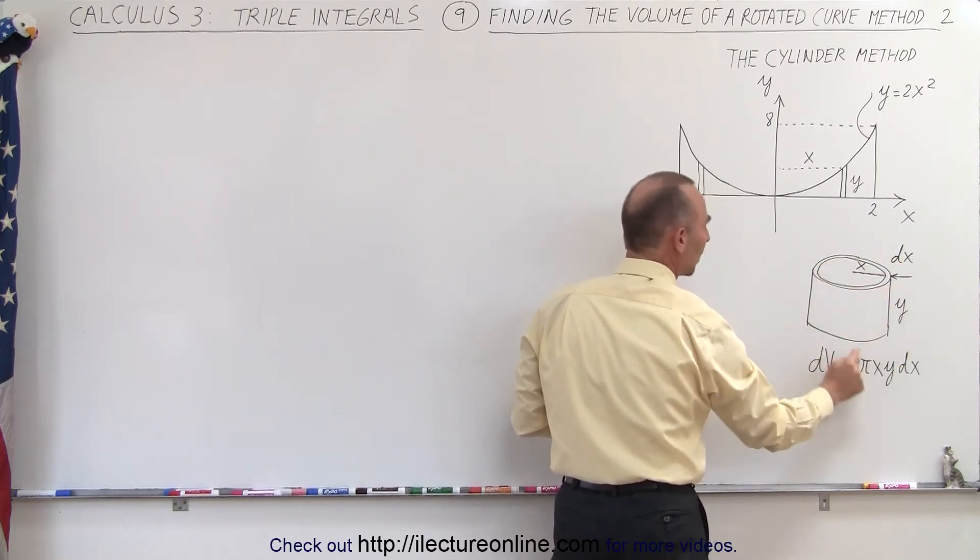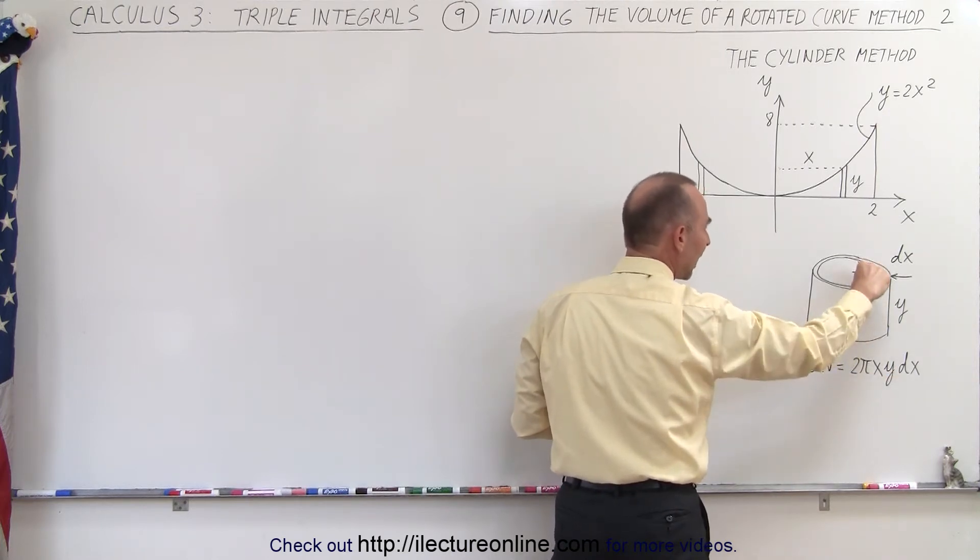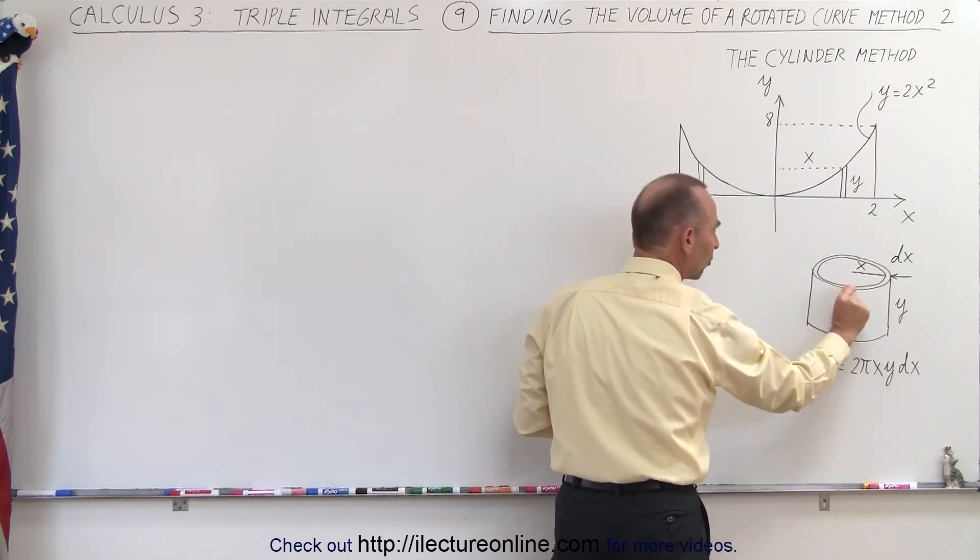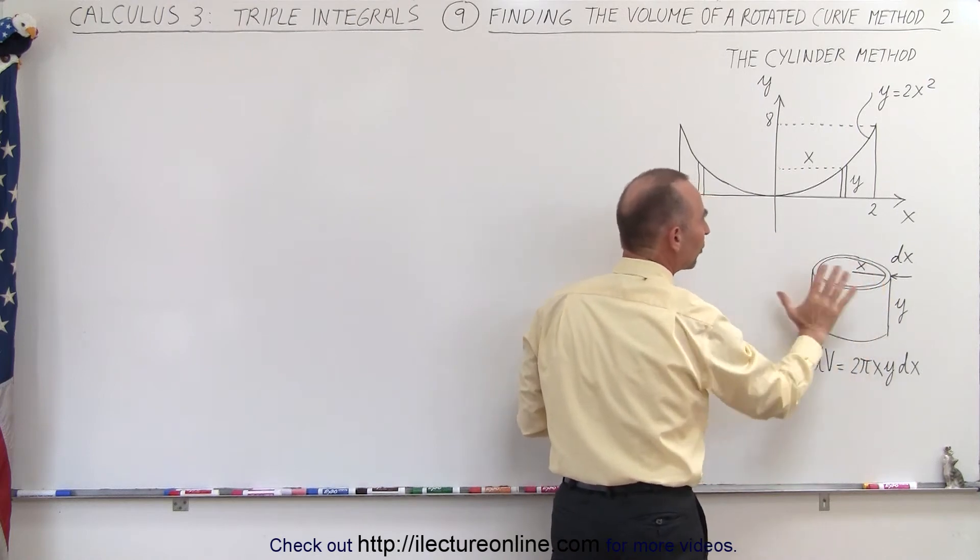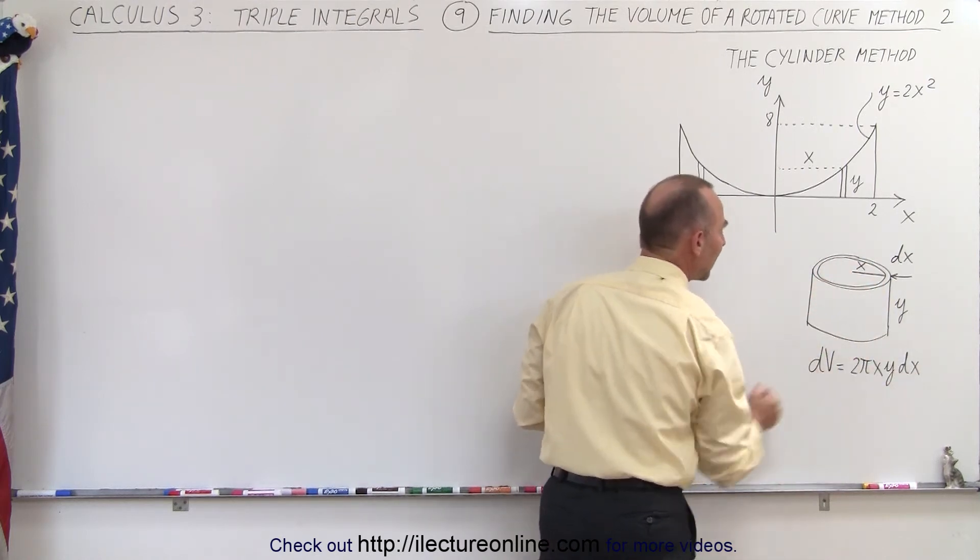The height would be y, so the surface area would be 2 pi x y, and times the thickness, we would actually get the small amount of volume, a small dv here, as 2 pi x y dx.